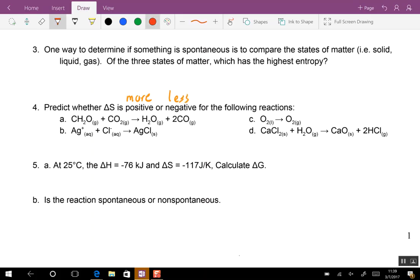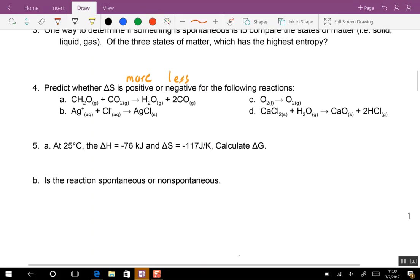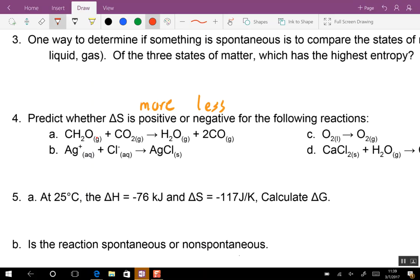Number four. When they say it's positive, it's more disordered. If it's negative, it's less disordered going that direction. Let's look at 4A and then you can do the rest of them. I'm going from gas to gas to gas to gas. That doesn't help us, does it? So what do we need to look at? Moles. Is it more? Yeah, because you're going from two moles in the first half to three in the second half. So more disorder.